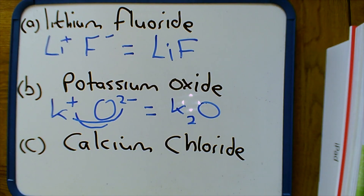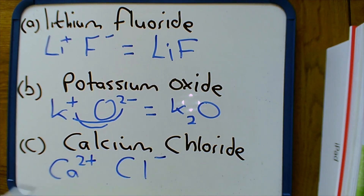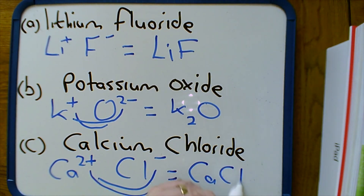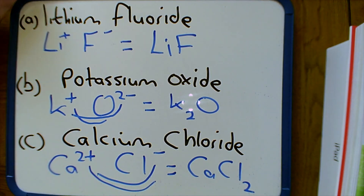For question C, calcium chloride: calcium is Ca2+ and chloride is Cl−. We need two Cl− to cancel every Ca2+. Swapping the numbers over gives one calcium and two chloride ions — the formula is CaCl2.